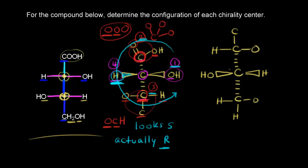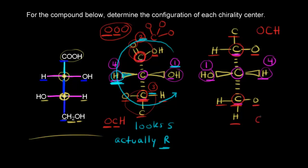Going back to our chiral center, the atoms directly bonded to it are an oxygen, a hydrogen, and two carbons. The oxygen has the highest priority — OH is number one — and hydrogen is the lowest priority. We have a tie again between the two carbons. The top carbon is bonded to oxygen, carbon, hydrogen — in decreasing atomic number order: oxygen, carbon, hydrogen. The bottom carbon is bonded to oxygen, hydrogen, hydrogen — so: oxygen, hydrogen, hydrogen. The first point of difference is carbon versus hydrogen, and carbon has the higher atomic number. So the top group is number two and the bottom group is number three.